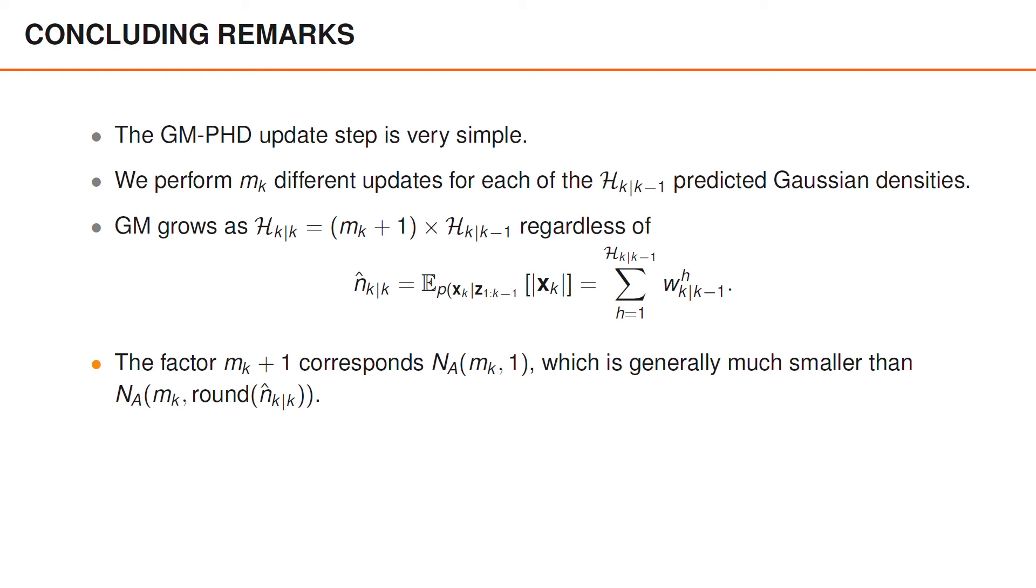the factor mk plus one that appears in the phd filter is identical to na for mk measurements and one object, which is potentially several orders of magnitude smaller than, say, n a of mk, and our current guess of the number of objects n hat k given k.